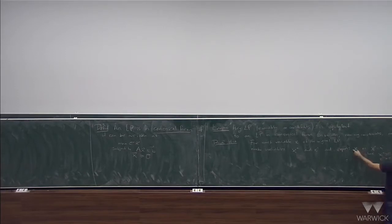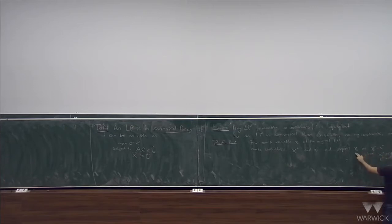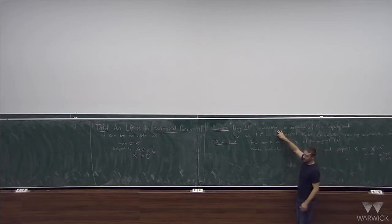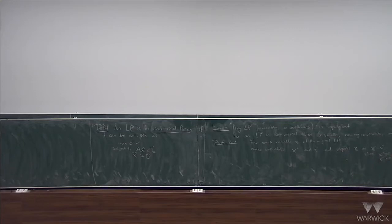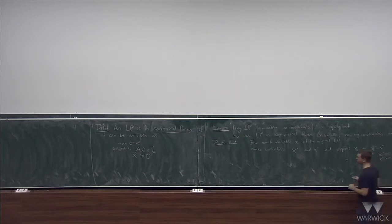Any real number can be expressed as the difference of two non-negative numbers. When I say express x_i this way, I mean everywhere in the original LP where you saw x_i, you replace it with x_i^+ minus x_i^-. That'll give you a new linear program: the number of variables has doubled because every variable turned into two variables, all of the new variables have non-negativity constraints, and you still have the same m constraints you had before. That's basically the proof.